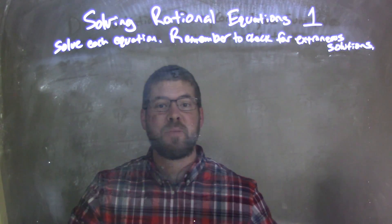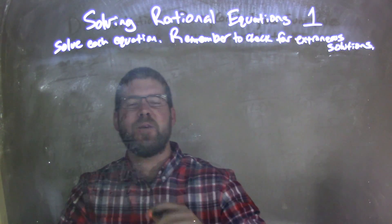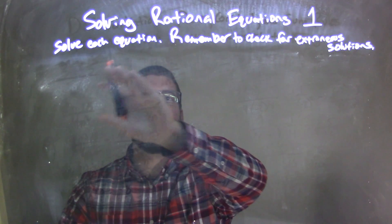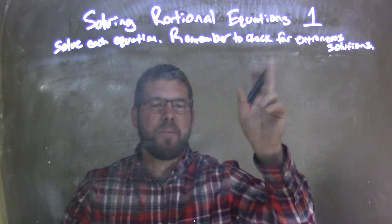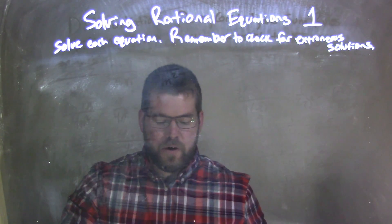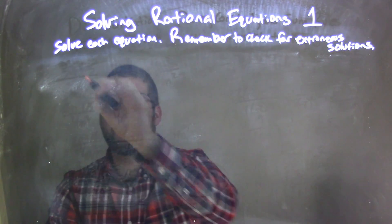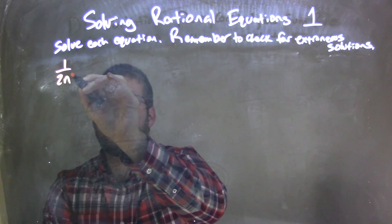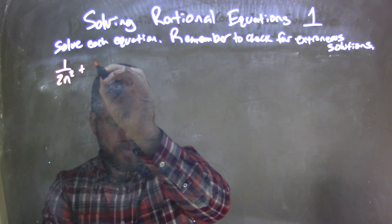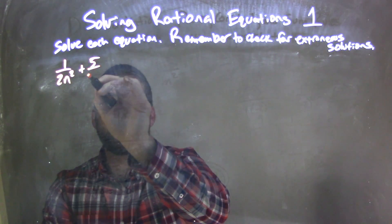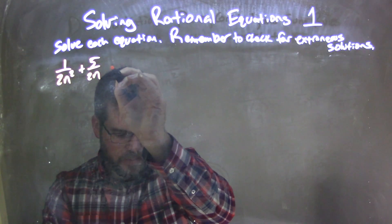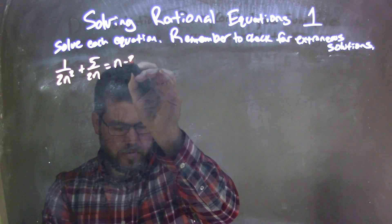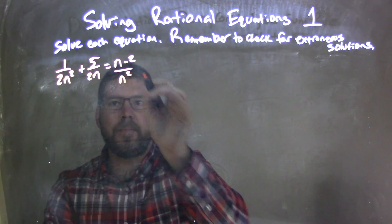Hi, I'm Sean Gannon, and this is MinuteMath. Today we're going to learn about solving rational equations. We're going to solve each equation, and remember to check for extraneous solutions. So if I was given this equation: 1 over 2n squared plus 5 over 2n is equal to n minus 2 over n squared.